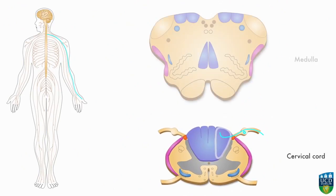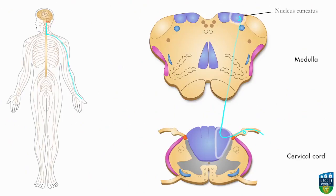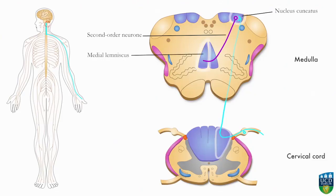The first order neuron continues to carry the impulse up towards the medulla in the fasciculus cuneatus. On reaching the medulla, it synapses with a second order neuron in the nucleus cuneatus. The second order neuron then crosses over to enter the contralateral medial lemniscus.